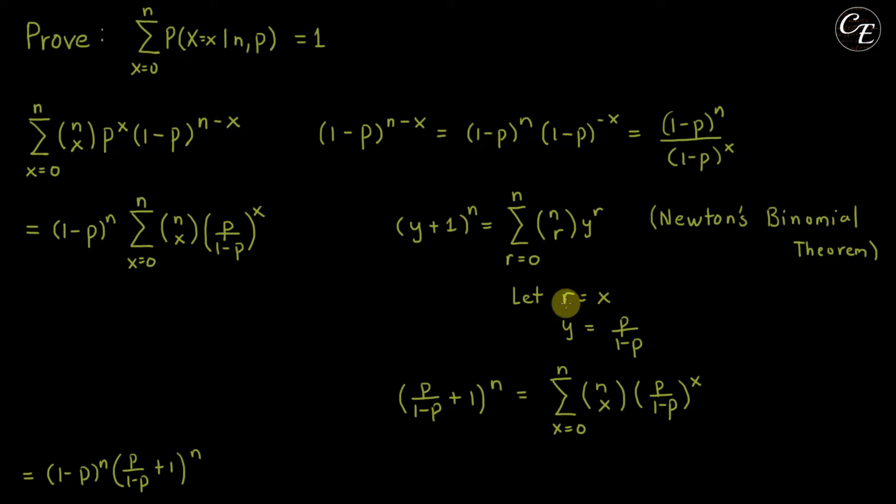Then the resulting expression for this one is summation of n chooses x times p over 1 minus p raised to x, which is the same with this one. This is x equals 0 to n when we change this r into x.